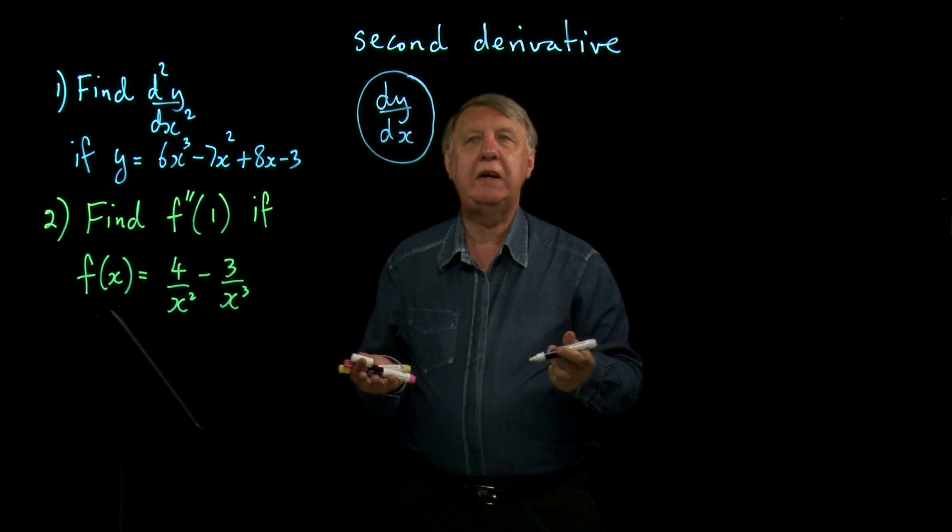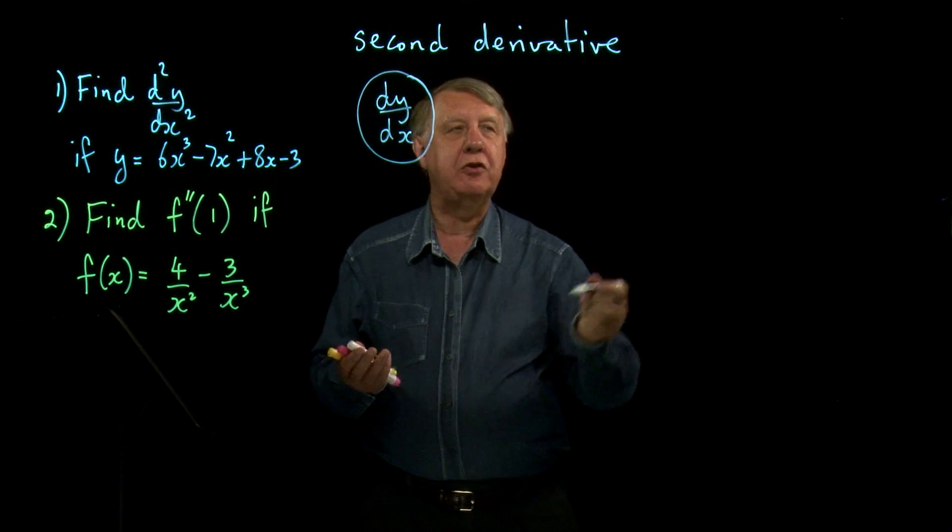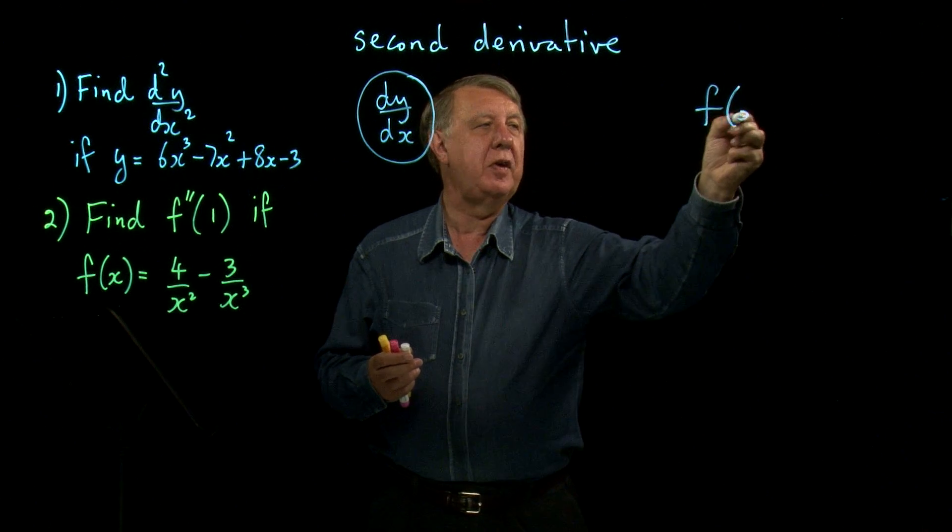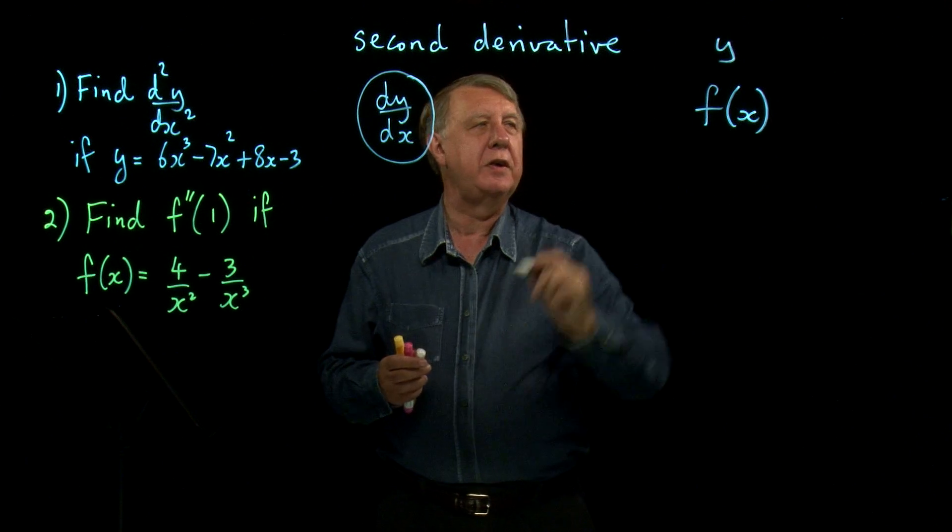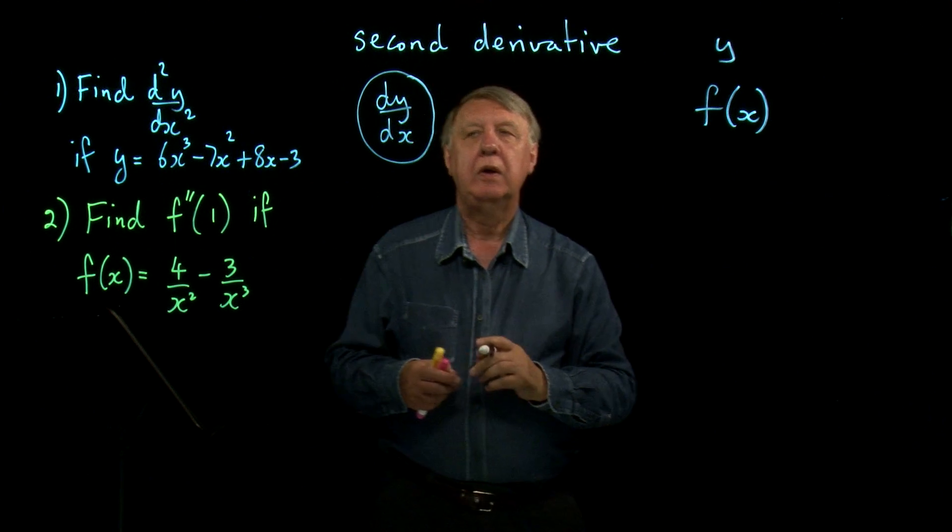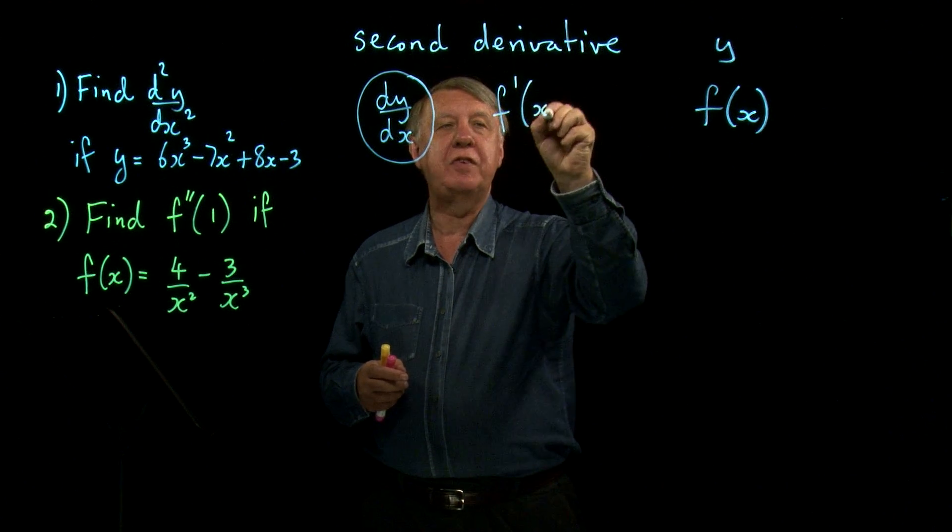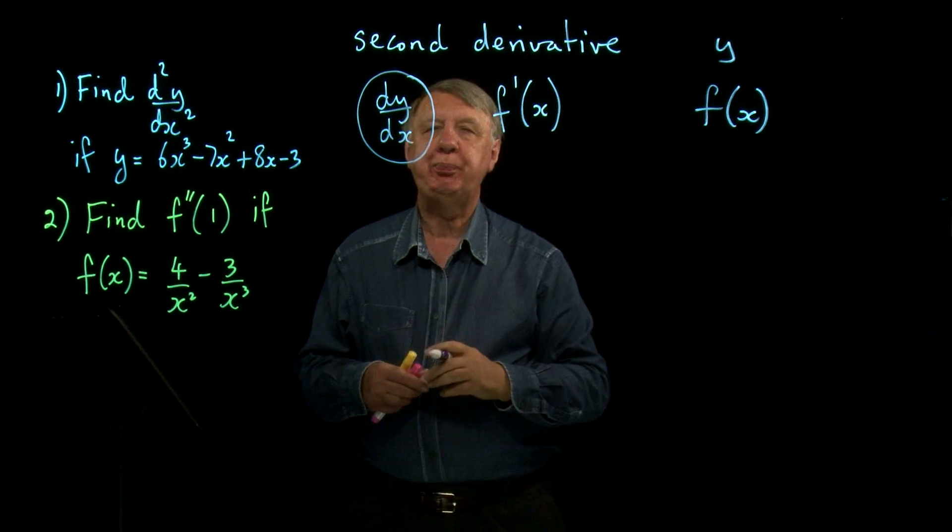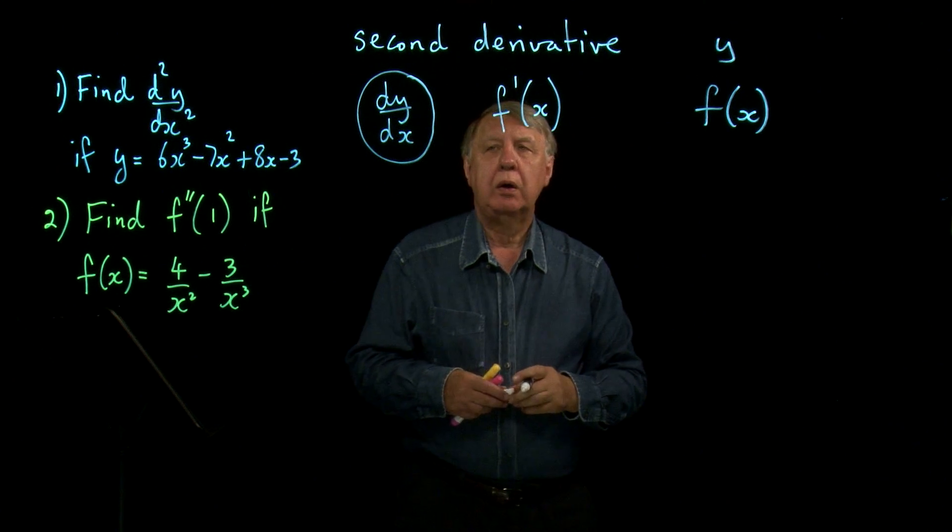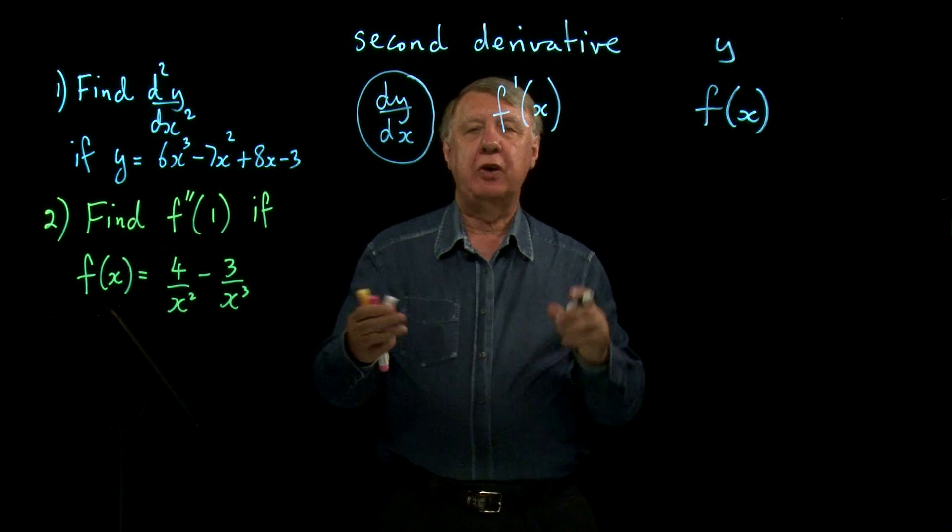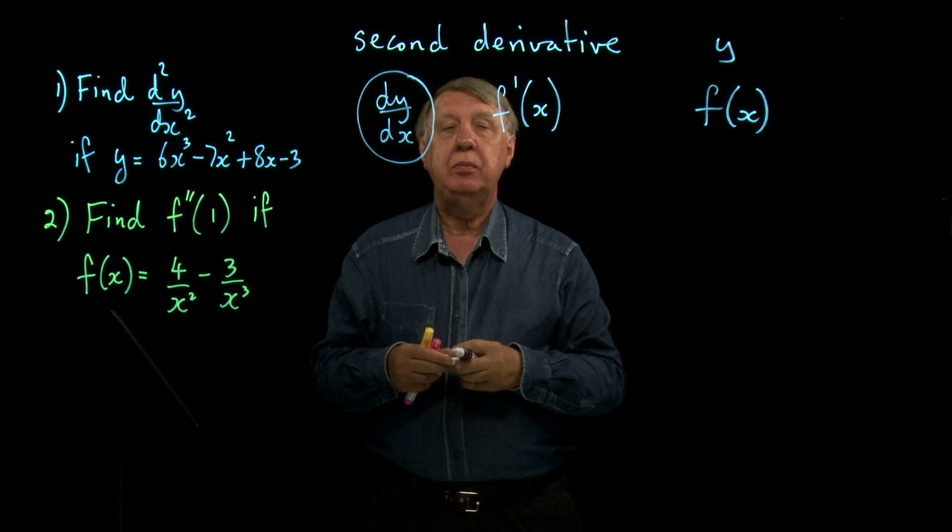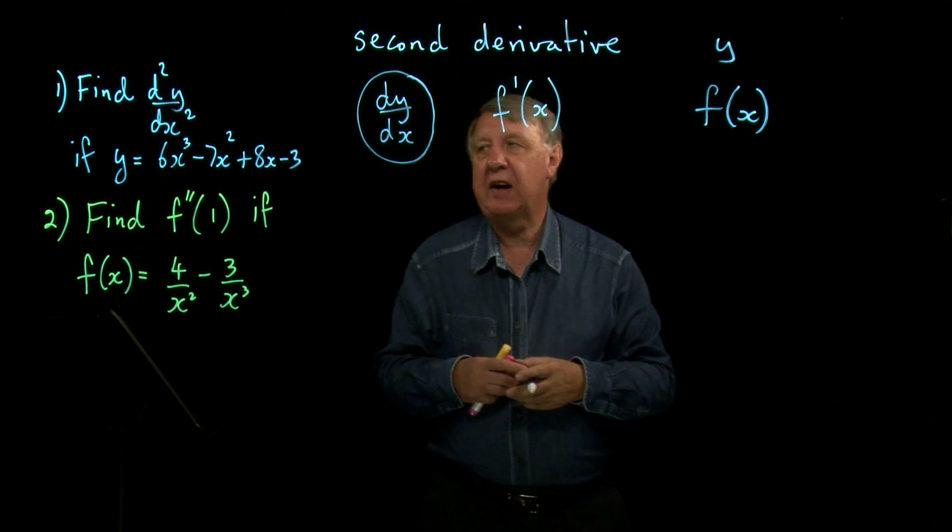And if you use the function x notation instead of y, so we're either going to be using the y notation or the function x notation, then the symbol for differentiate is f dashed x. Once we've done the differentiation, we get a function of x. So why couldn't I differentiate that again?